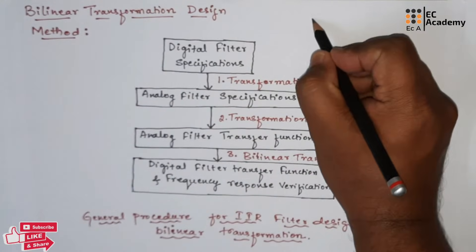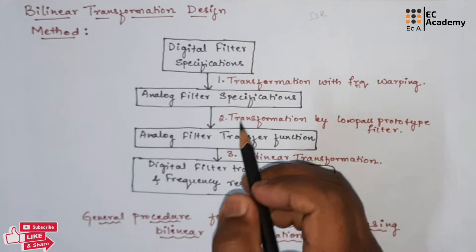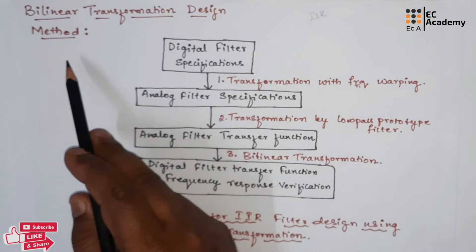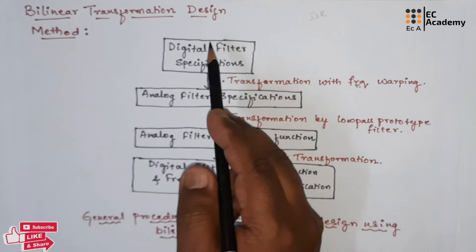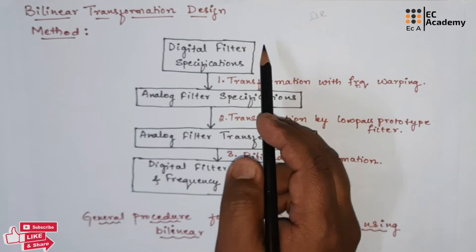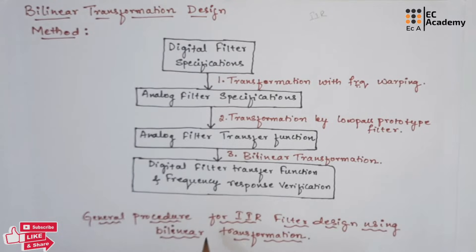When we design an IIR filter, we can't directly design a digital filter. Hence, we will go with a bilinear transformation design, which is used to convert from analog transformation to digital filter transformation. This figure illustrates a flowchart of the general procedure for IIR filter design using bilinear transformation.